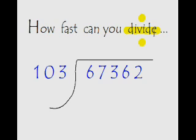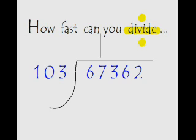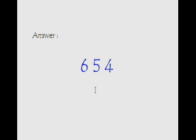How fast can you divide 67362 by 103? Now you have ample idea how to do it, so give it a try. I am giving you 10 seconds for this, and your time starts now. Your time is up. The correct answer is of course 654.